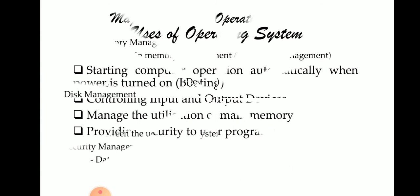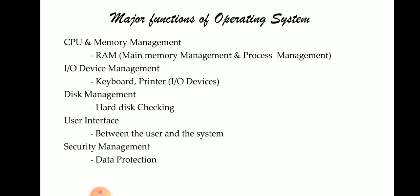The major functions of the operating system: first is CPU and memory management — main memory management, that is RAM (Random Access Memory), management of primary memory. In multiprogramming, the OS decides which process will get memory, when, and how much. Then there is I/O device management — keyboard, printer, and so on — the OS manages device communications via their respective drivers.